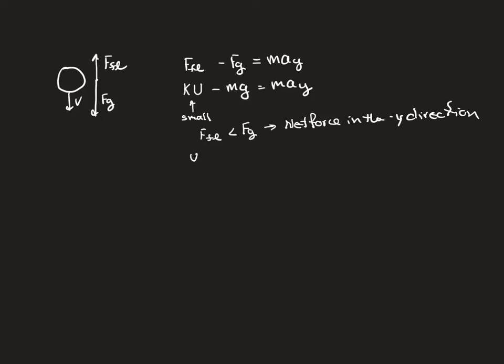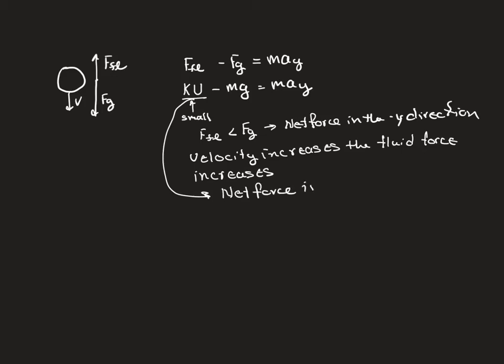And as the velocity increases, the fluid force or air resistance increases. Because any constant times a number that's growing is a growing number. So what's going to happen is that as this term here gets bigger and bigger, the net force in the negative y direction decreases.